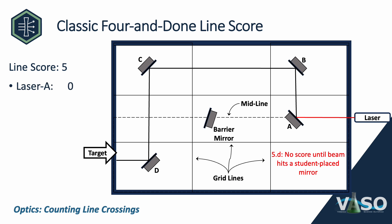This first segment from the laser to mirror A scores nothing, because there is no line crossing score until the beam hits a student-placed mirror. In this particular configuration, it also happens not to cross any grid lines, but even if it did, it would score nothing here. Moving on to the segment from mirror A to mirror B, you can see this crosses one line at the red circle, so that scores one.